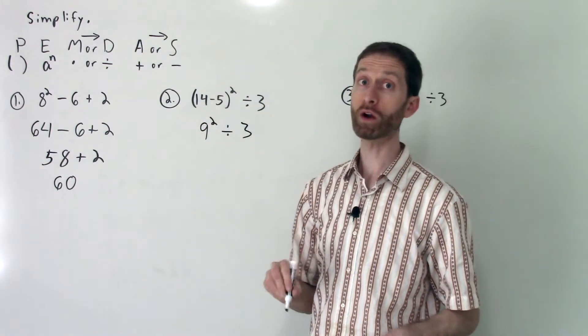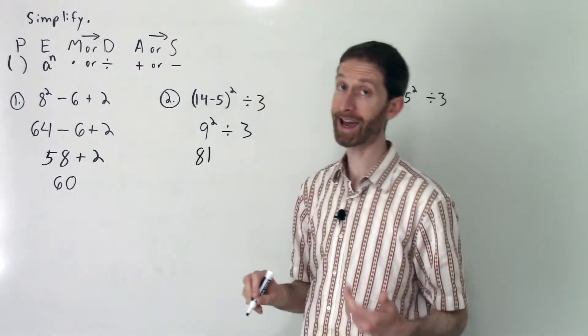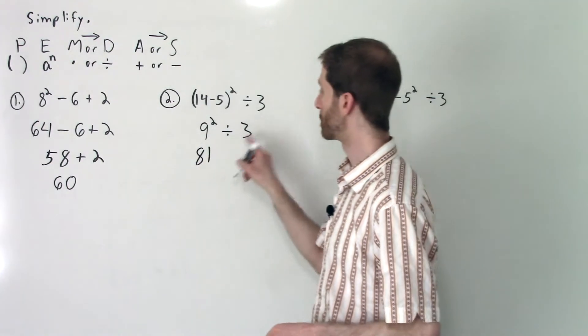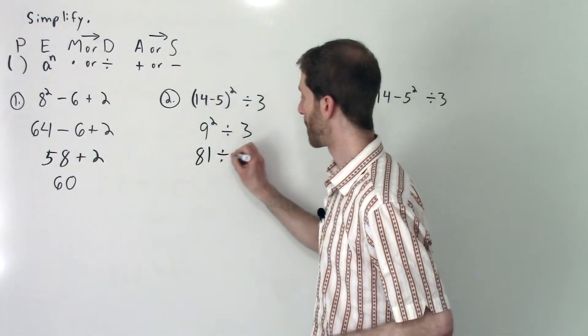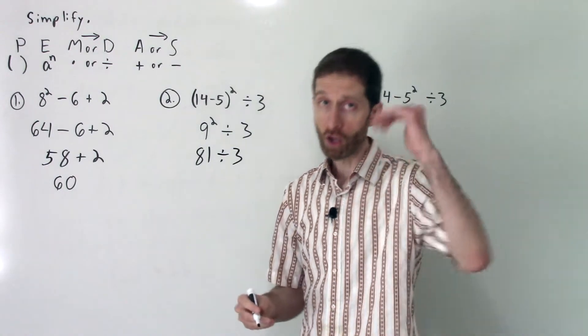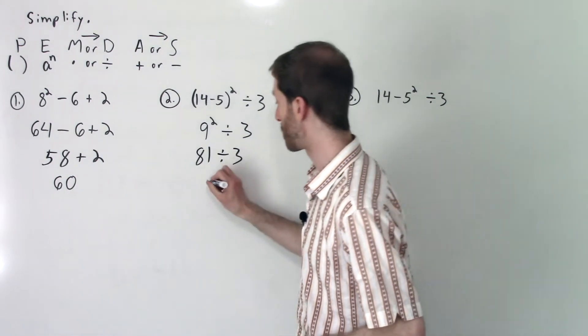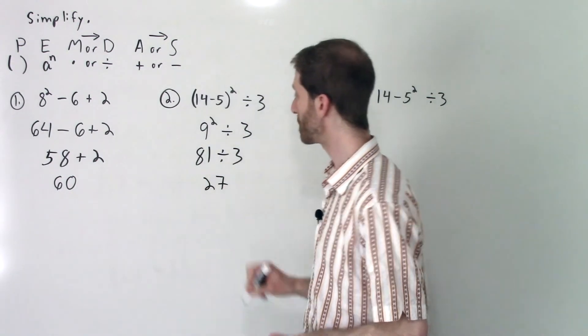And now from here 9² is 81. I do the 9² because that's exponents which comes before division. And now I'm left with 81 ÷ 3. 81 divided by 3 is 27.